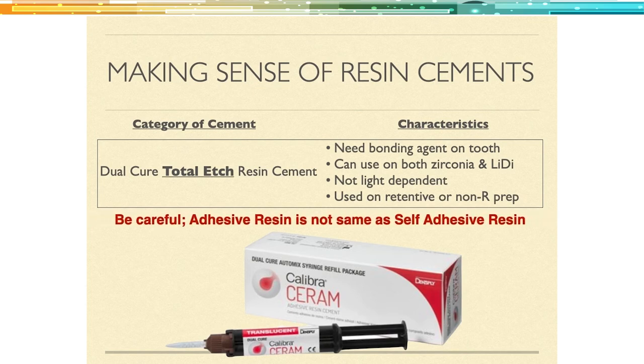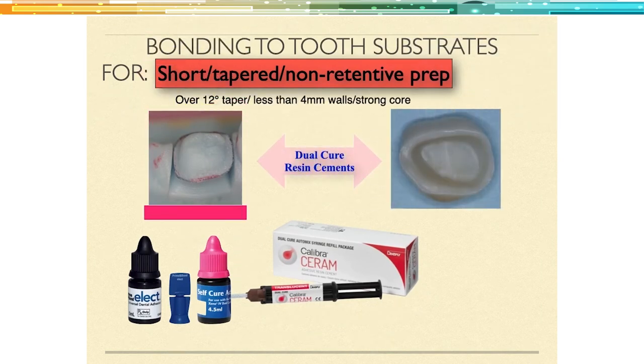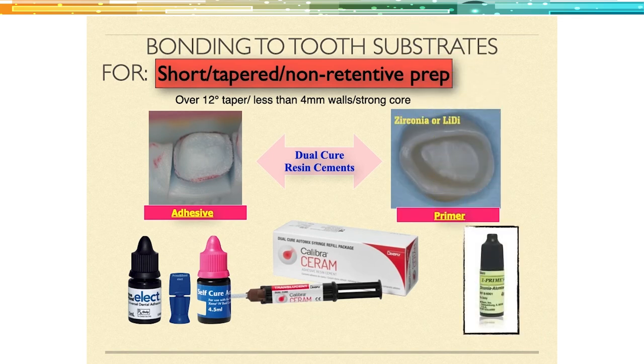Remember with resin cements: adjust the bite and do major adjustments at try-in, clean the inside of the crown after you try it in, wait 30 seconds after seating so the chemistry gets going, then completely light-cure after cleanup. Now let's talk about a dual-cure total-etch resin cement, which I use a good majority of the time as a bonding approach — I rarely get any debonds using this method. Be careful though: a dual-cure total-etch resin cement is not the same thing as a self-adhesive resin cement. The self-adhesive has the adhesive built in. With total etch, we need to bond this like we would a composite — I use Prime Bond Elect.